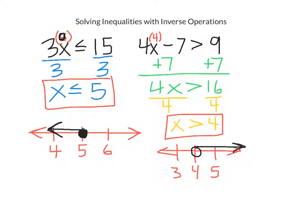Now 0 this time is not involved. So something easy like 10. So if I try 4 times 10, that's 40. And 40 minus 7 is 33. And 33 is greater than 9. And so my arrow is going in the correct direction.